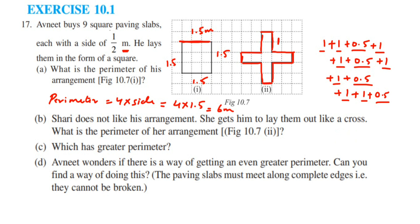Now the third question asks which arrangement has a greater perimeter. For the first one we got 6 meter, and for the second one we got 10 meter. So obviously the second arrangement has a greater perimeter.